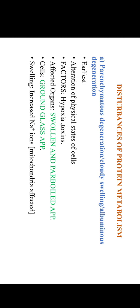The next important topic is disturbances of protein metabolism. We have first parenchymatous degeneration, also known as cloudy swelling or albuminous degeneration. This is the earliest degeneration, involving alteration in the physical state of the cell. The factors which cause parenchymatous degeneration are hypoxia and toxins. The affected organs appear with a par-boiled appearance; organs are swollen and cells show a ground-glass appearance. The cell organelle mitochondria is affected, resulting in increased accumulation of sodium ions, which causes swelling.